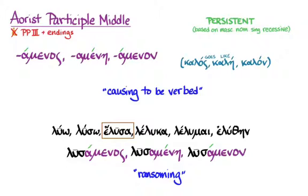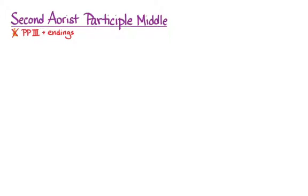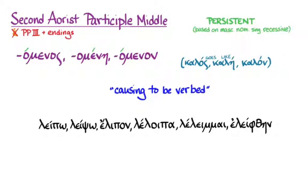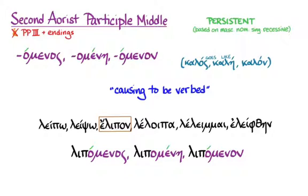Before we move on to the aorist passive, we have to remember the second aorist participle middle. Same basic rules: third principal part, no augment, plus endings to make it into an adjective. The endings are the ones you know for the present participle middle and passive — -omenos, -omene, -omenon — the same as used for the future middle and future passive. It declines like kalos with the same accent rules, and the default translation, just like the first aorist middle, is 'causing to be verbed.' With leipo, which gives us our second aorist third principal part, we take the stem and add our endings to get lupomenos, lupomene, lupomenon — meaning 'causing to be left behind,' for any case, number, or gender.